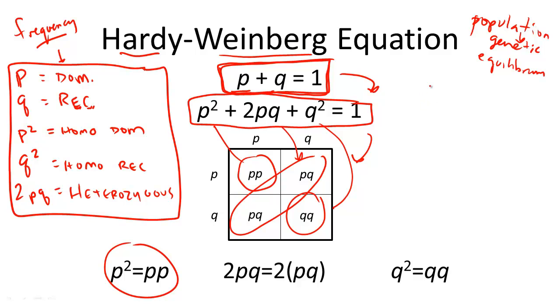So let's note that gray is dominant. We'll represent that with a big G. So we know big G, big G, homozygous dominant. The frequency in the population is 81%.